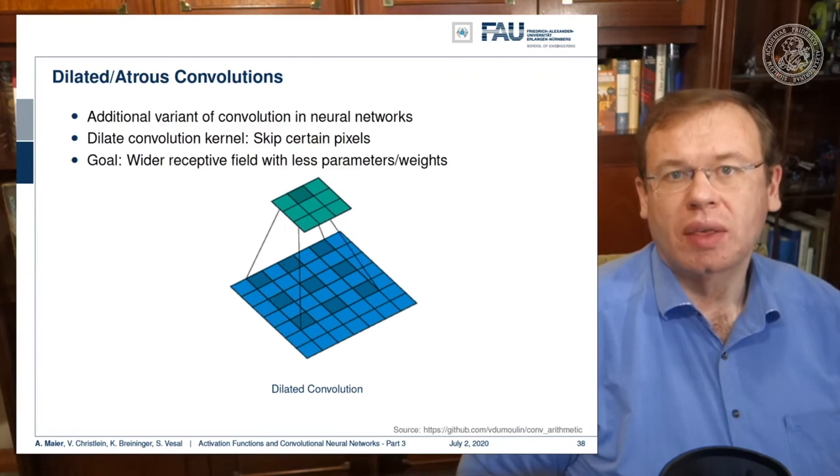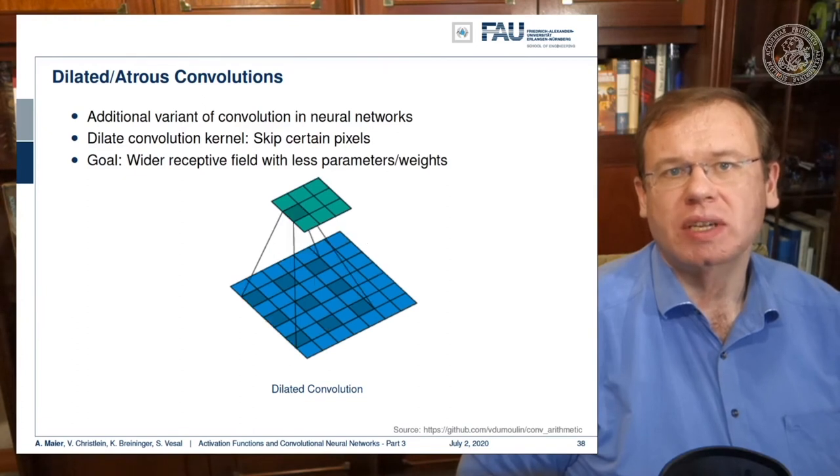Here we reduce the size of the output by a factor of s because we are skipping so many steps. Mathematically this is simply convolution and subsampling at the same time. We have this small animation here in order to show how this is being implemented. There are also other things like dilated or atrous convolutions.